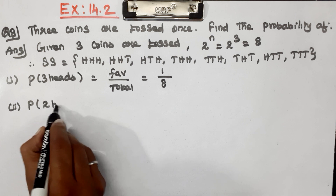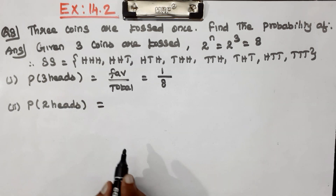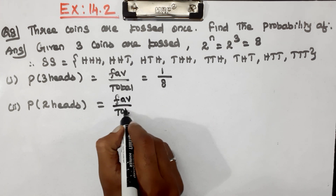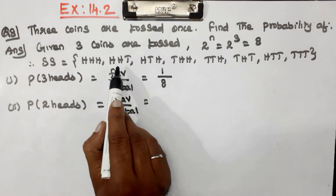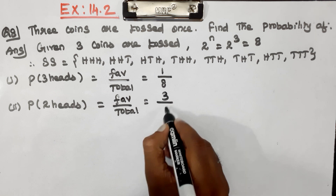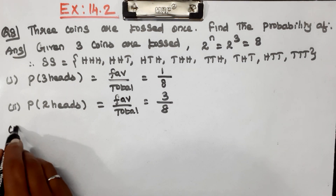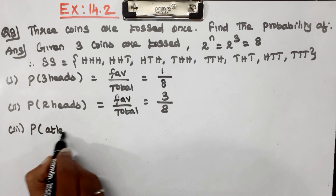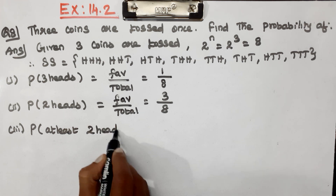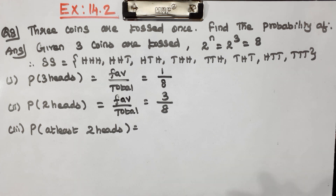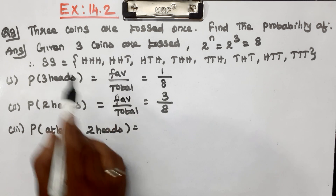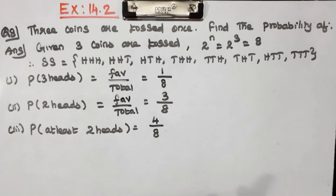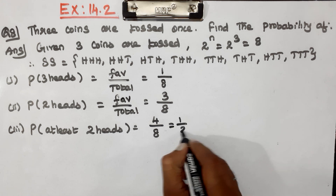Second question: Probability of at least 2 heads. At least 2 heads — the answer is 4 by 8, which is equal to 1 by 2.